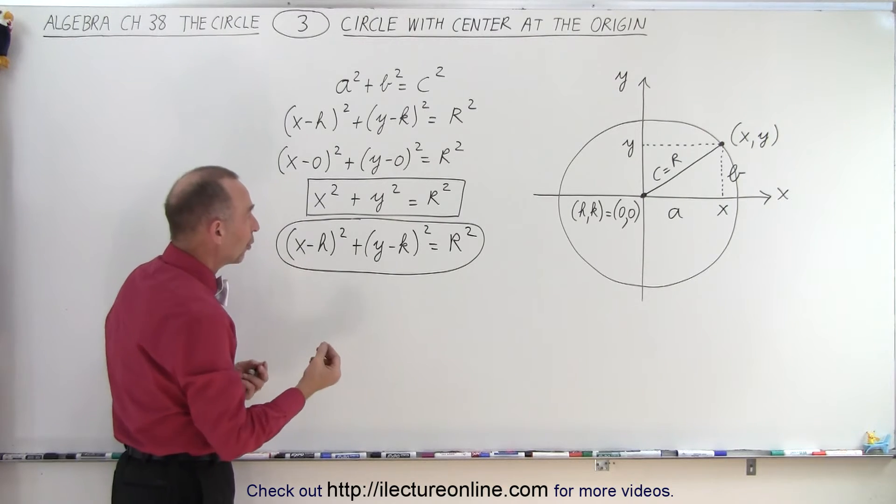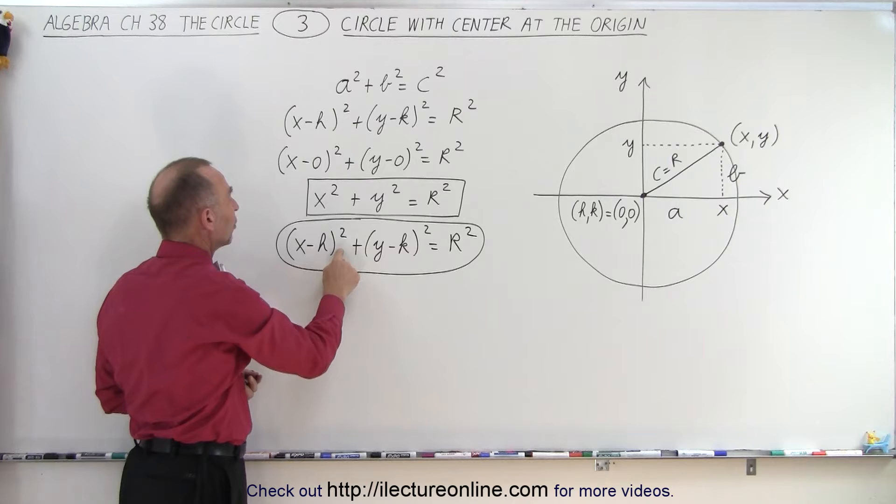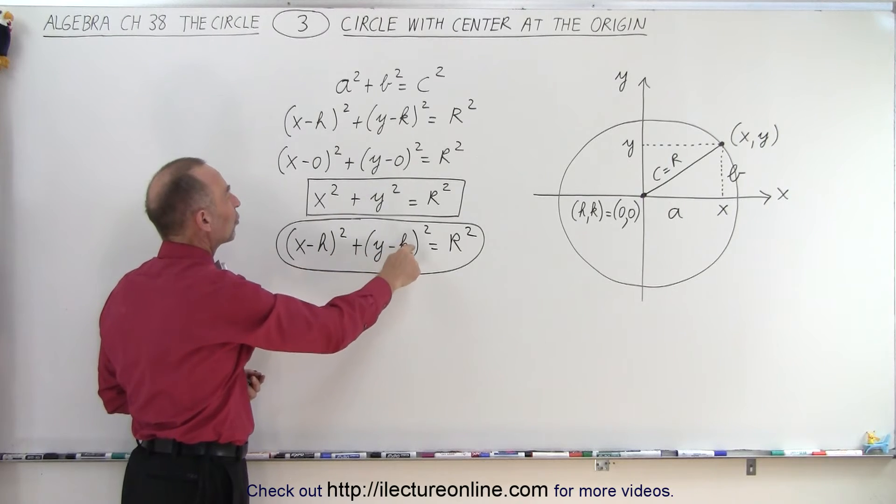If the center is not at the origin, then we have to write it as x minus h quantity squared plus y minus k quantity squared equals r squared.